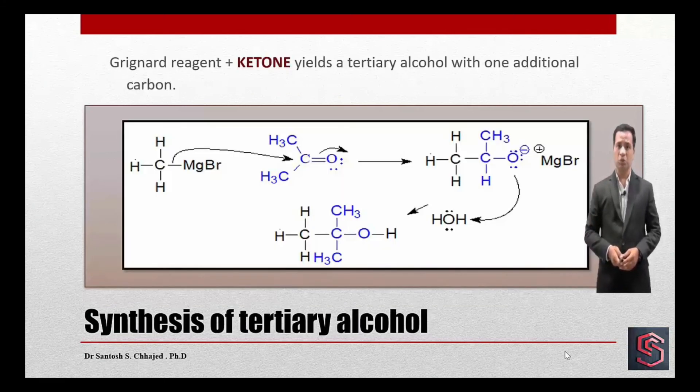Similarly, when we allow reaction between ketone and Grignard reagent, synthesis of tertiary alcohol takes place. Length of carbons, that is what is required in case of alcohol. We can decide from the nature of alkyl side chain in Grignard reagent, as well as nature of both the alkyl groups which are becoming linked to carbonyl carbon.